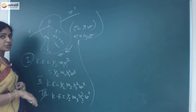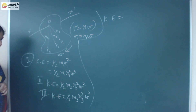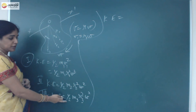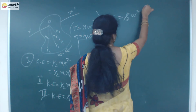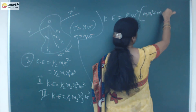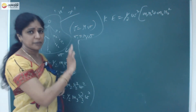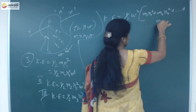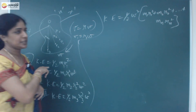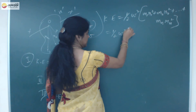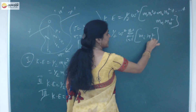The kinetic energy of the whole body is the total kinetic energy, given by the sum of all individual kinetic energies. Taking half and omega squared as common, the expression becomes half omega squared times the bracket m1 r1 squared plus m2 r2 squared. If the object contains n number of particles, we can write this as half omega squared times the summation from i equal to 1 to n of mi ri squared.